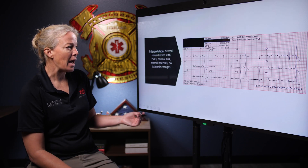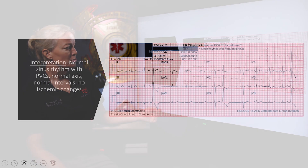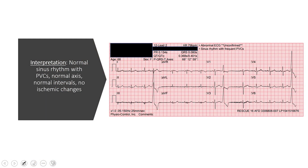So if we go back to our 12-lead and try to characterize these PVCs, we see a PVC here, a PVC here, and one right here. Going through them, this is exactly what we see — a very wide QRS, greater than 120 milliseconds.